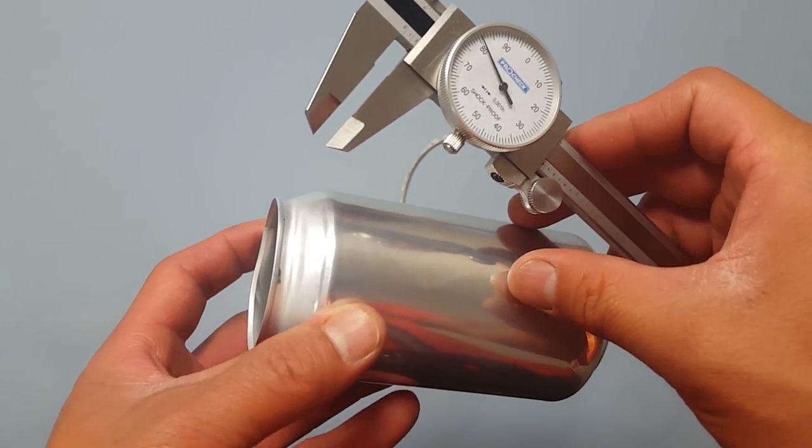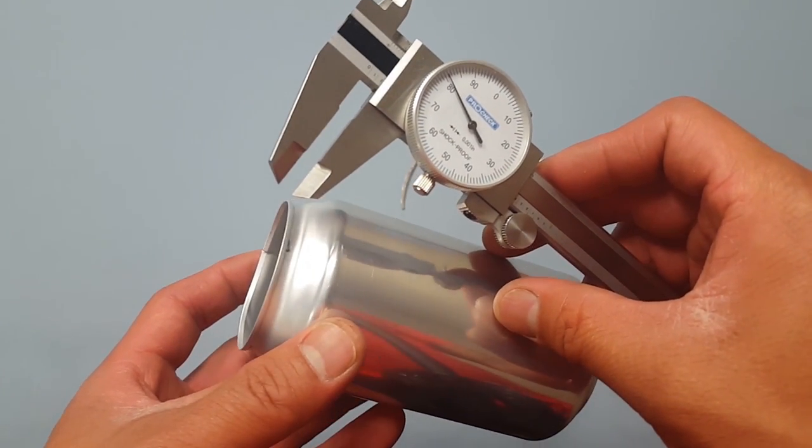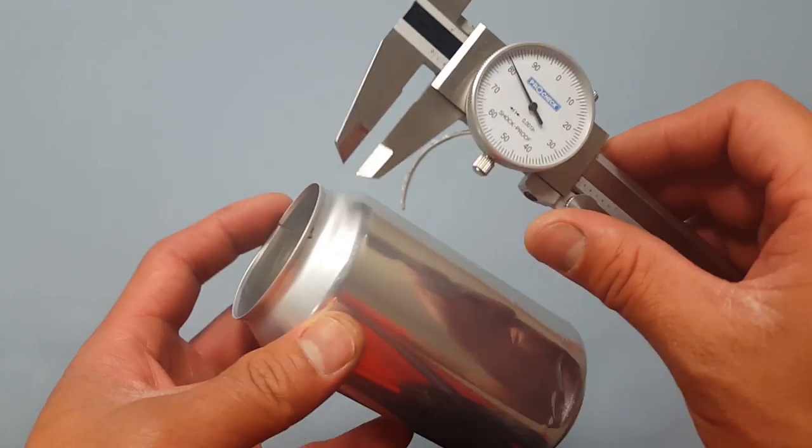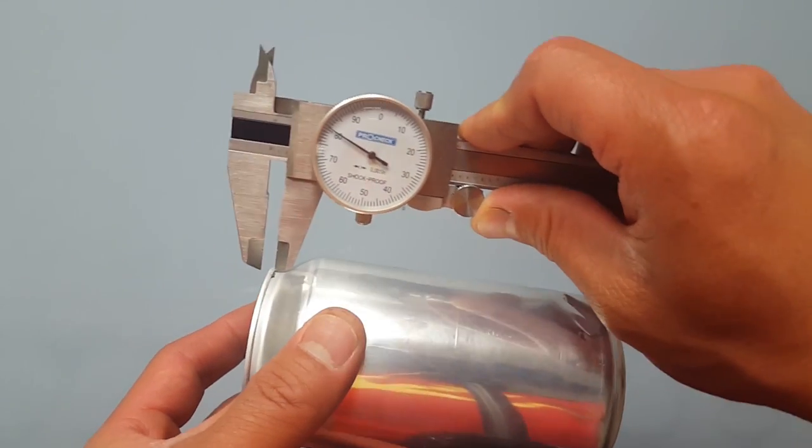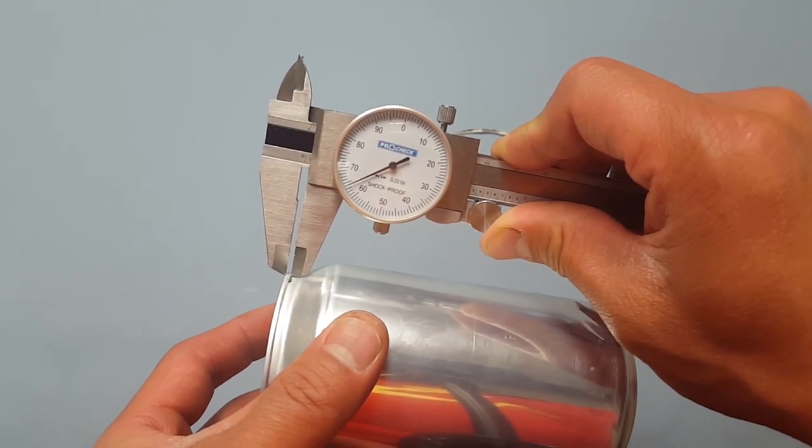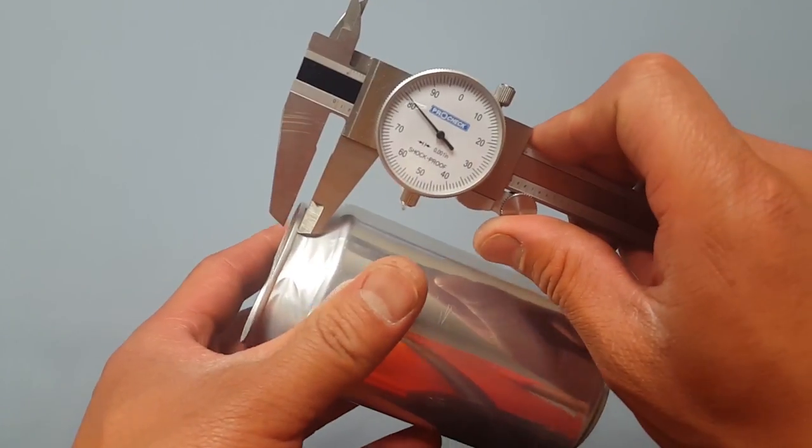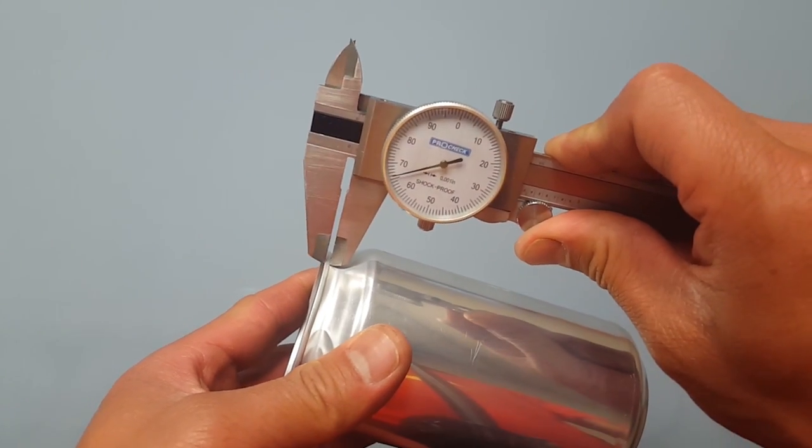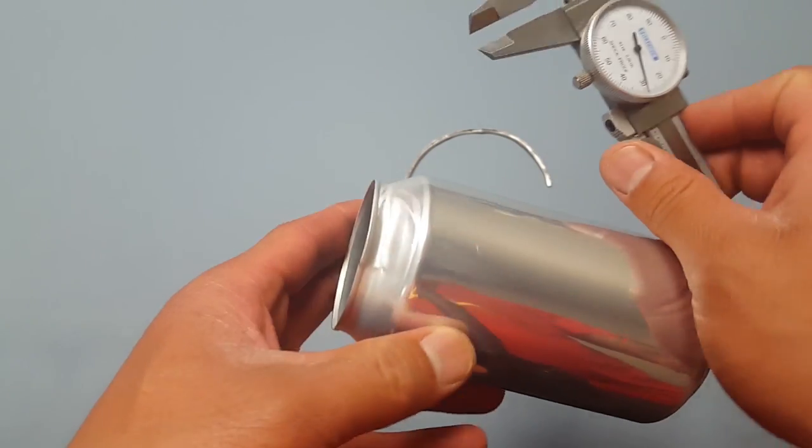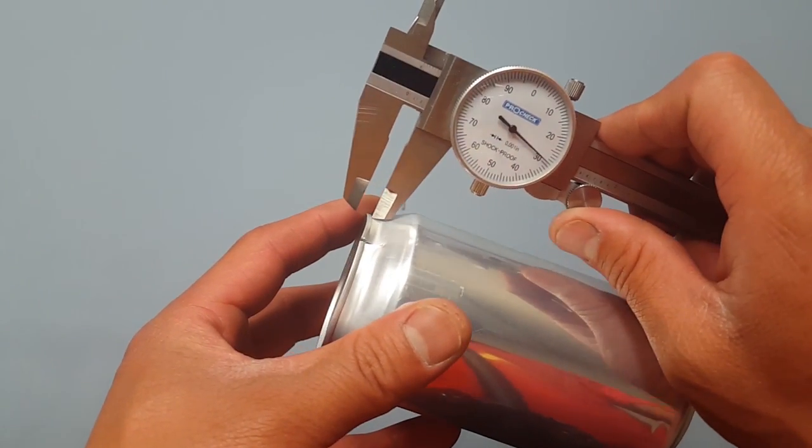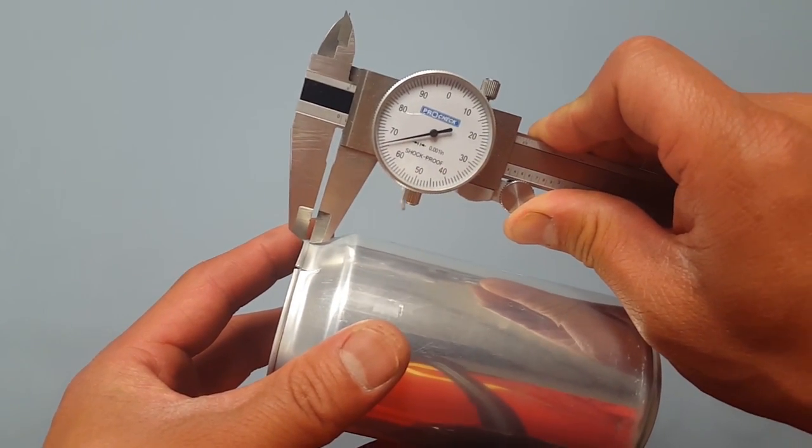Again, this is a Ball can. Ball specifies the body hook to be 65 plus or minus 5 thousandths. Measure in four locations. There's 65, 66, 66.